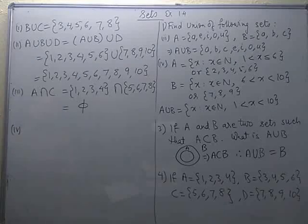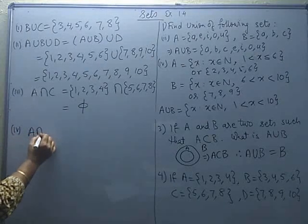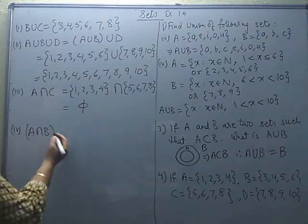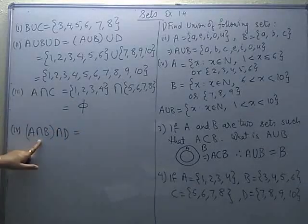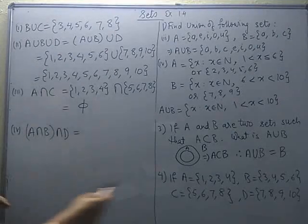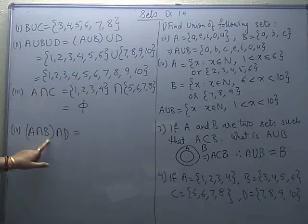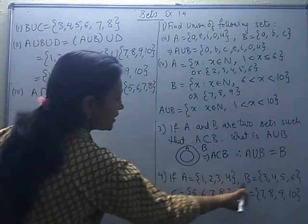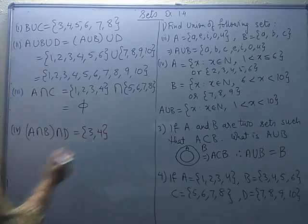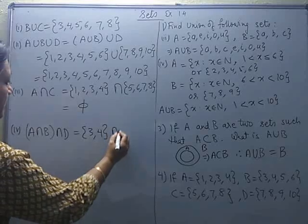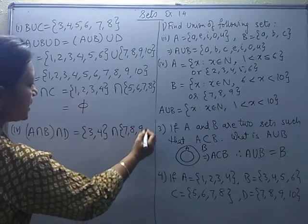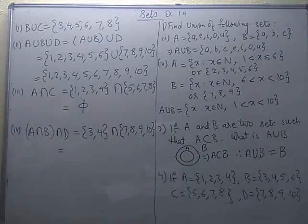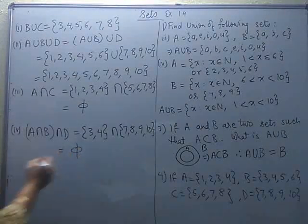If we go for finding A intersection B and then take its intersection with D: first find A intersection B. Looking at set A and set B, the elements common to A and B are 3 and 4. So A intersection B is {3, 4}. Now taking intersection with D, which has elements 7, 8, 9, 10 — we don't find any element common among them. So this intersection comes out to be the null set (empty set).